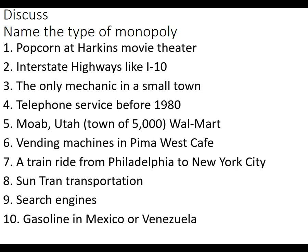The first example is a geographic monopoly: the Harkins movie theater is the only theater selling popcorn inside that movie theater. Interstate highways are government monopolies — they own them and let you drive on them for quote-unquote free. Only mechanic in a small town is a geographic monopoly. Number four is a natural monopoly. Number five — the one Walmart in a small town — is also a natural monopoly. The vending machines at Pima West got a license from Pima College, so technically it's a government-created monopoly that produced a geographic monopoly — sometimes they work together. Amtrak is a government-run monopoly. The next example is a natural monopoly. Search engines are probably a technological monopoly — they have the technology — with some natural monopoly tendencies because Google can do it so cheaply. Gasoline in Mexico or Venezuela — those are government monopolies.